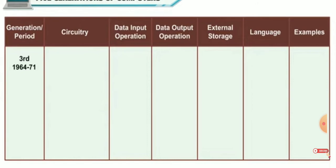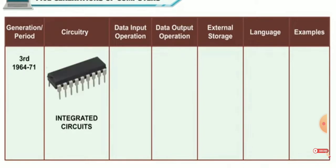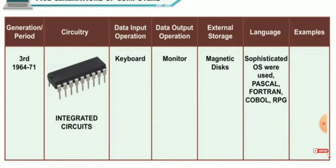The third generation of computers came about around 1964 to 1971, and these computers had integrated circuits or ICs instead of transistors. A keyboard was now used to input data and the output was received on a monitor. Magnetic disks provided external storage. Complex operating systems like Pascal, COBOL, FORTRAN, and RPG were used. Examples are IBM System 360, Apple I, and Altair.